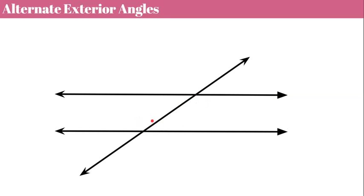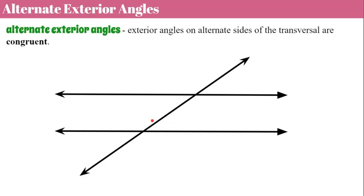Now we have alternate exterior angles. Alternate exterior angles are exterior angles on alternate sides of the transversal, and they are congruent. Alternate sides and exterior — same measure, congruent. Alternate sides, exterior, congruent.